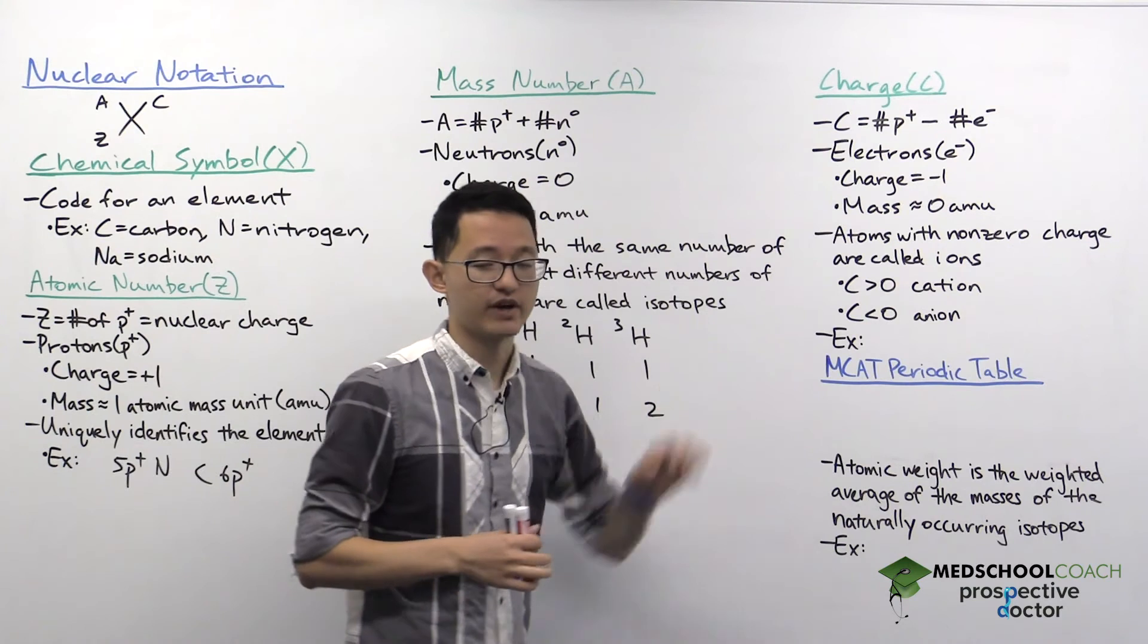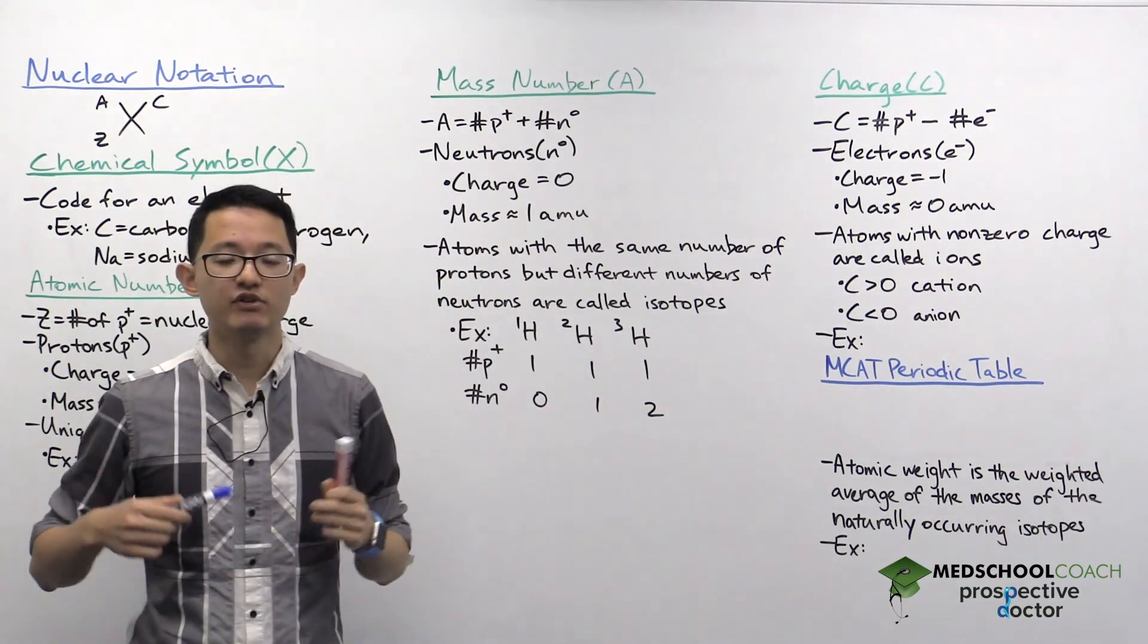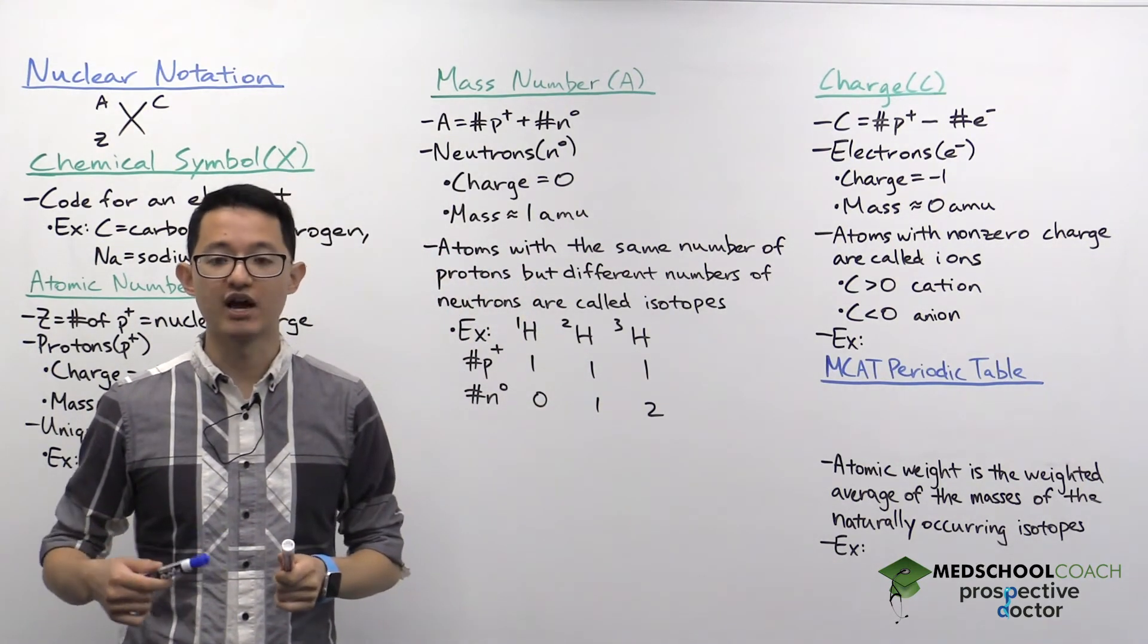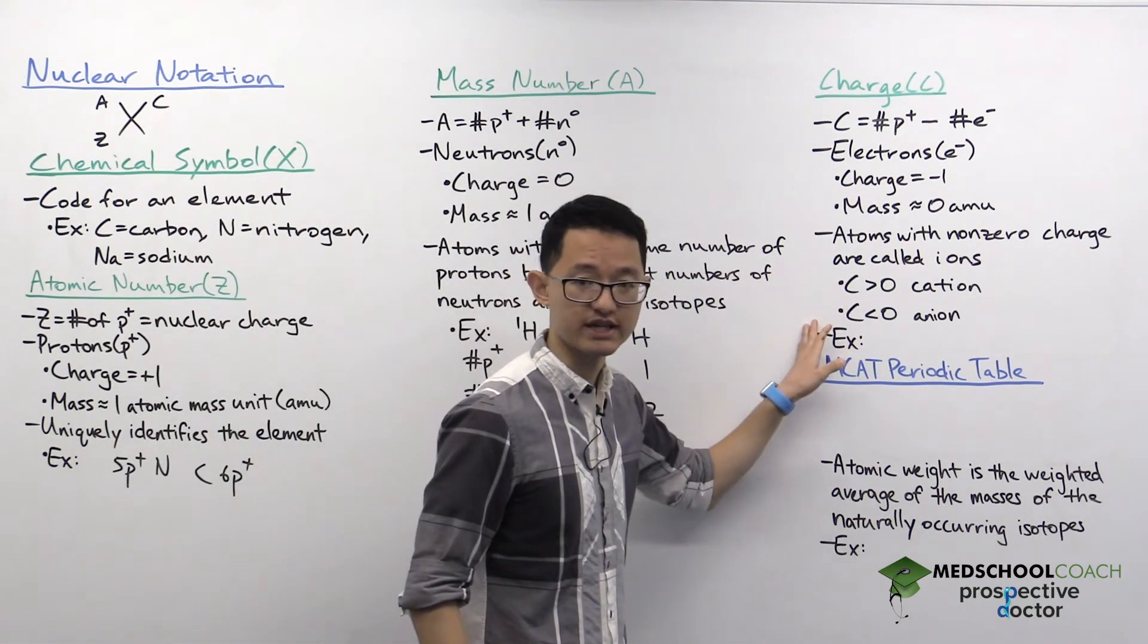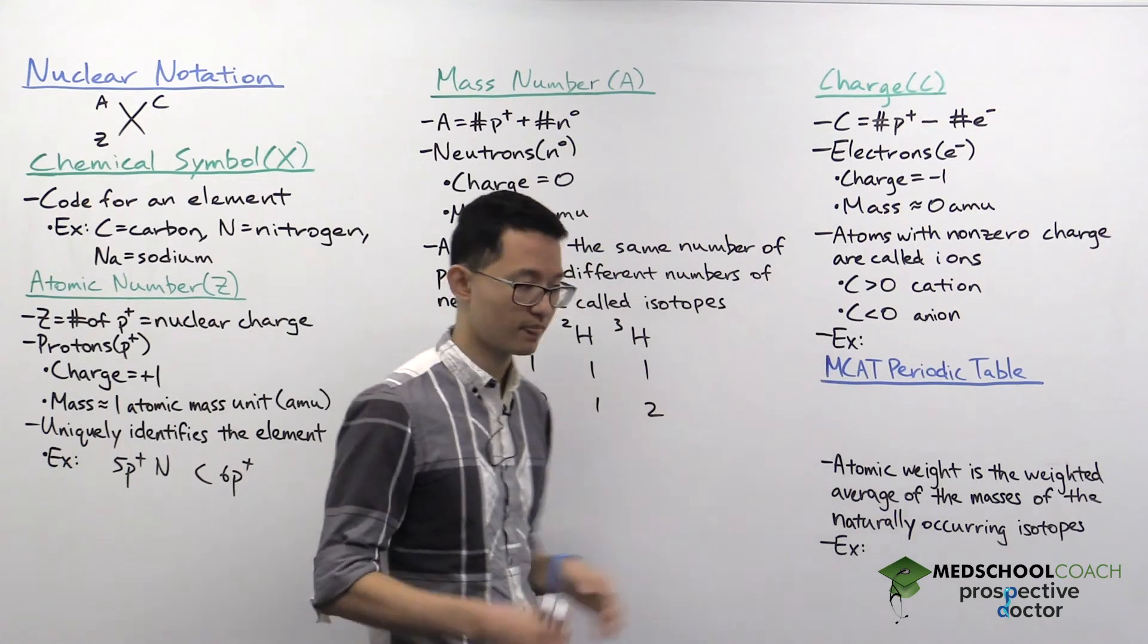Now, when you calculate the charge for any particular atom, if you have a non-zero charge, you have what we call an ion. If your charge is positive, you have a cation. If your charge is negative, you have an anion.